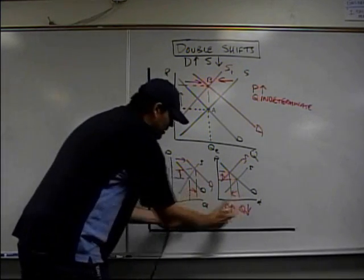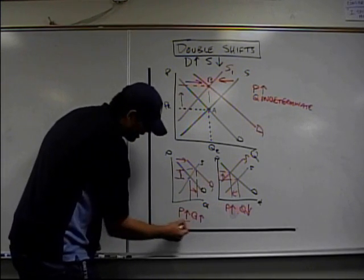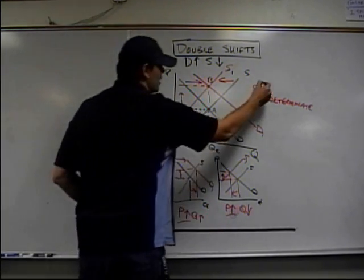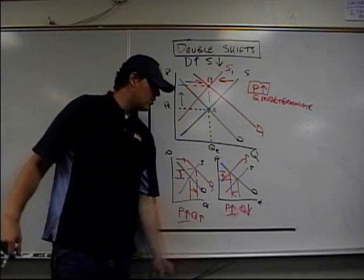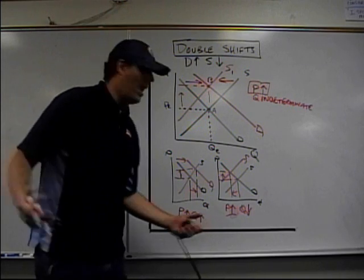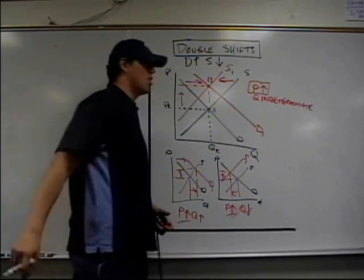Now, all you've got to do is take these two things and put them together. When I put these together, take a look. Price is definitely going to go up, no matter what happens. But the quantity goes up here, quantity goes down here. Indeterminate. I can't tell. Quantity is indeterminate.